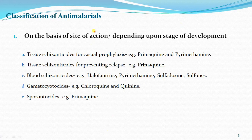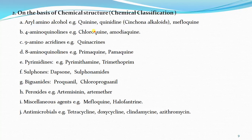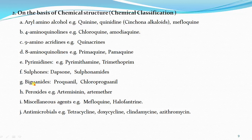The second classification is based on chemical structure. The chemical classification of anti-malarial agents: first is aryl amino alcohols — examples are quinine and quinidine, cinchonine, the cinchona alkaloids. Second is four amino quinolines — example is chloroquine, amodiaquine, hydroxychloroquine. Then nine amino acridine — that is quinacrine. Eight amino quinolines — primaquine. Pyrimidines — pyrimethamine, trimethoprim. Sulphones — dapsone. Biguanides — proguanil. Peroxides — artemisinin, artemether.